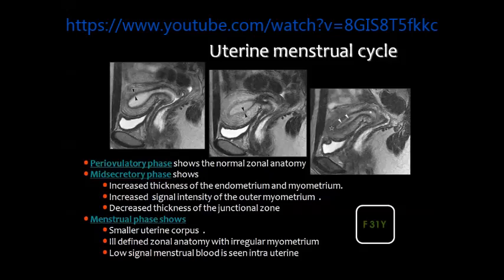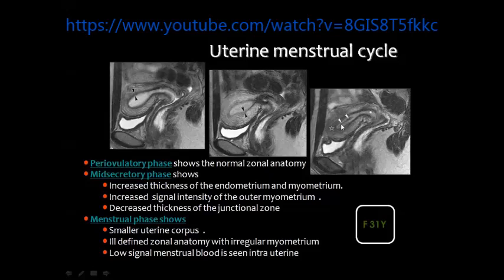There are several changes which occur in the uterus during the menstrual cycle. In the proliferative phase you can see the zonal anatomy on T2-weighted image — the endometrium is bright, the junctional zone is thin and dark, and the myometrium is gray. In the mid-secretory phase there is appreciable thickening of the myometrium, relative distension of the uterine cavity, and thinning of the junctional zone. In the menstrual phase you see blood clots inside the uterine cavity regaining its normal configuration.